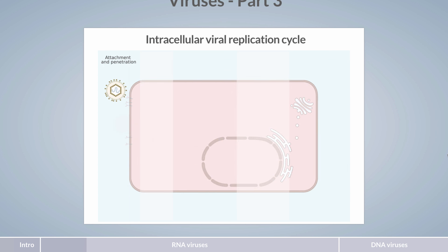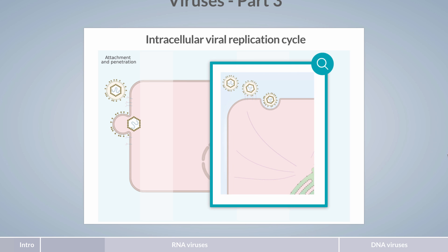If the virion possesses an envelope, it fuses with the plasma membrane after attachment to the membrane protein and releases the capsid into the host's cytoplasm. For other viruses, especially non-enveloped viruses, virions can be endocytosed upon receptor binding. In the cytoplasm, virions are transported along the cytoskeletal filaments.